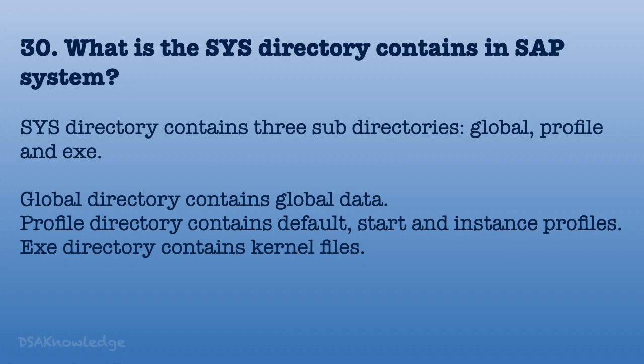What does the SYS directory contain in an SAP system? The SYS directory contains three sub-directories: Global, Profile, and Exe. The Global directory contains global data. The Profile directory contains the default, start, and instance profiles. The Exe directory contains kernel files.